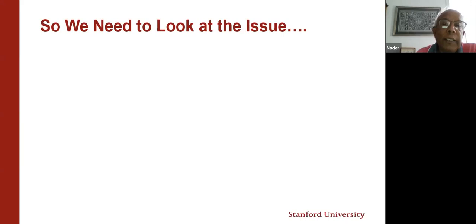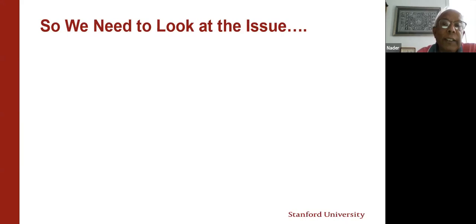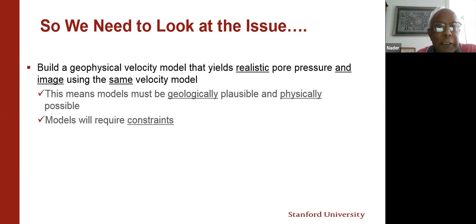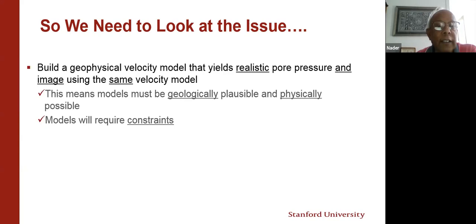So we need to look at this issue more carefully. The goal is to build a geophysical velocity model that yields a realistic pore pressure — meaning nothing should be in the unphysical range — and at the same time get a realistic image using the same velocity model, so that I don't have to alternate between multiple migration models, multiple velocity models, and multiple pore pressure models. That is one criterion.